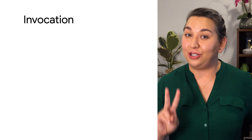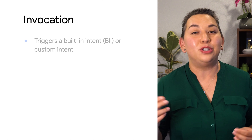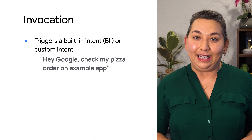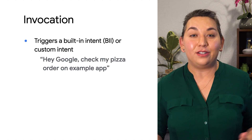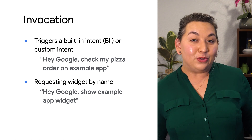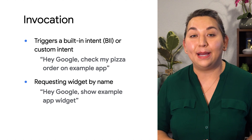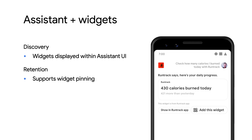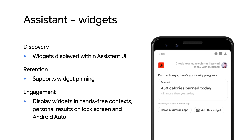Widgets can be invoked by the Assistant in two ways. The first is where the user asks for information that triggers a built-in intent or custom intent, and the widget is displayed within the Assistant UI. The second is when a user directly requests the app's widget — for example, saying hey Google, show example app widget. By integrating your widgets to Assistant, users will be able to discover your widgets since they'll be displayed within the Assistant UI with a chip, so users can add the widget to their home screen. In situations when the user hasn't unlocked the device, or with Android Auto, widgets can still be surfaced as a result of a query.